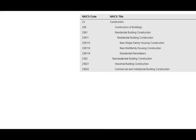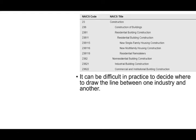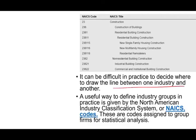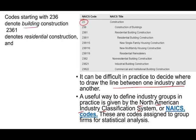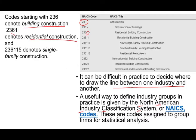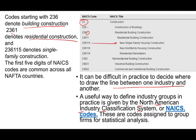It can be difficult to determine what industry a company falls in, and it's hard to draw the line between one industry and another. A useful way to define industry groups is the North American Industry Classification System (NAICS). These codes are assigned to groups to group firms for statistical analysis. For example, the code for construction is 23, and codes starting with 236 denote building construction, while 2361 is residential construction, and 236115 is single-family construction. The first five digits are common across all NAFTA countries — the US, Canada, and Mexico.